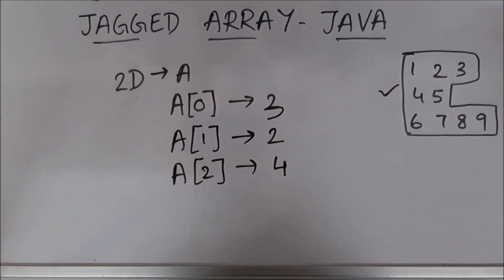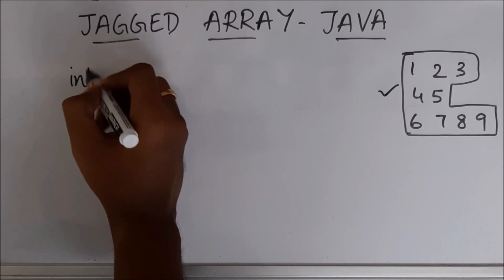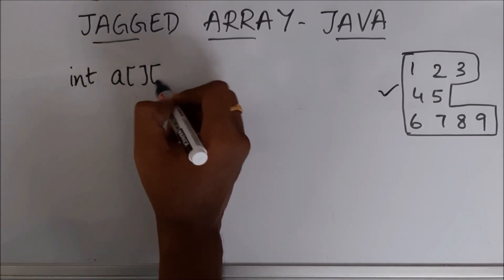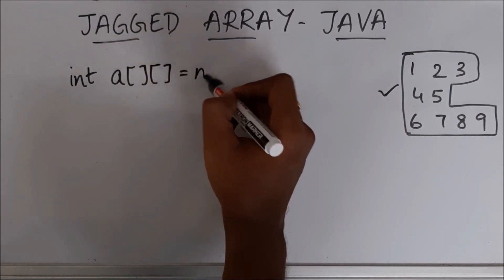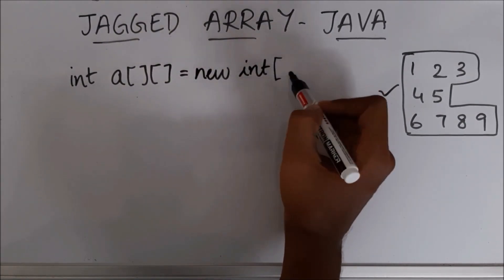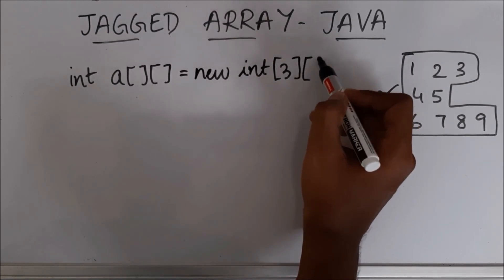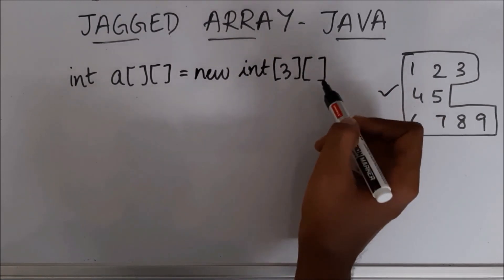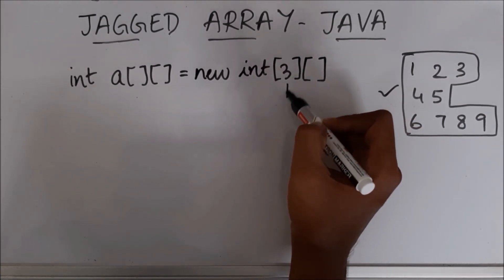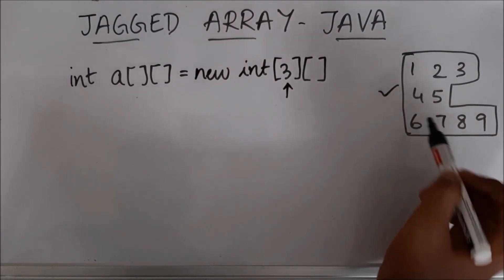Let's see how we can do it in Java code. We create a 2D array of type int: int a = new int — in this case I am going to specify only the number of rows, leaving the column size empty. So we create an array of 3 rows: row number 1, 2, and 3.